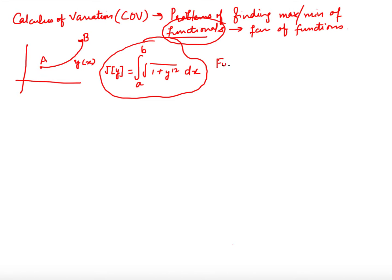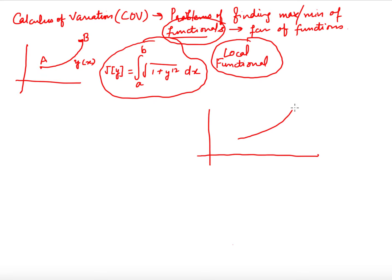What is the formal definition of a local functional? Suppose you have this curve y(x) and I want to find the length of this curve — this is point A, this is point B. I can divide this curve into many parts, find the length of each part, and add all these parts to obtain the final length. So this functional — the length — can be broken up in this way.